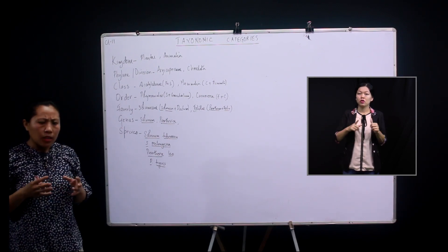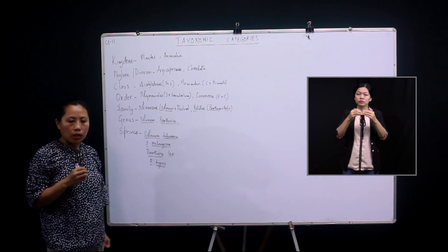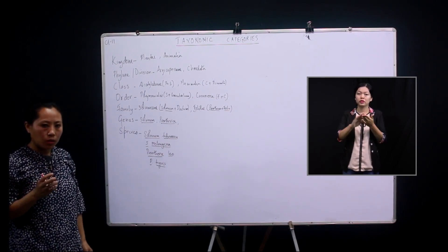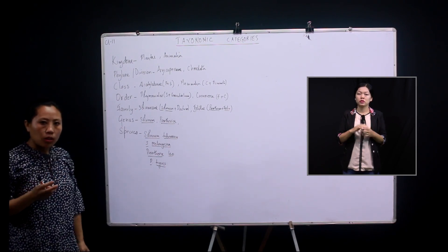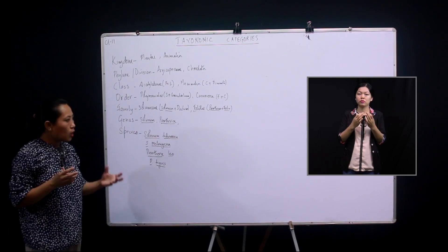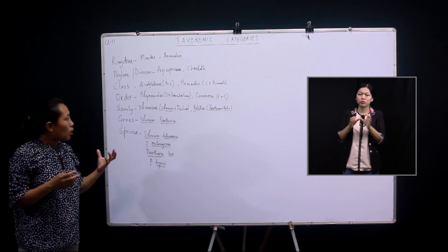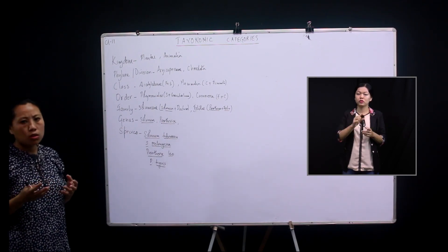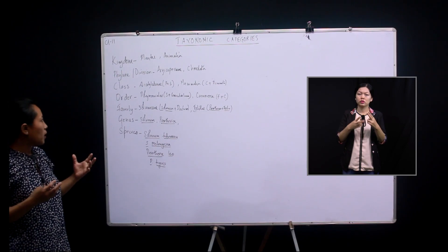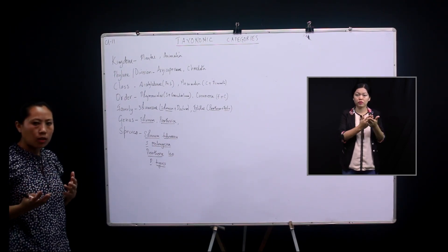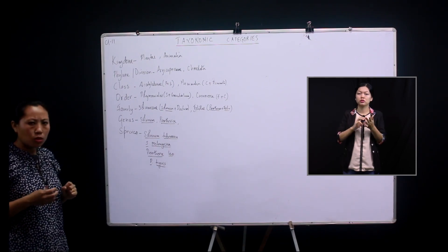Putting taxonomic categories in logical sequence is known as hierarchy. There are seven obligate taxonomic categories: kingdom, phylum or division, class, order, family, genus, and species. These are used during the classification of a plant or animal. Some taxonomists also use sub-categories like subclass or suborder in between, but these seven are the obligate important ones. They are arranged in ascending order as we move from species upward to kingdom.